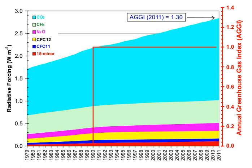Various proxies and modeling suggest larger variations in past epochs. 500 million years ago, CO2 levels were likely ten times higher than now. Higher CO2 concentrations are thought to have prevailed throughout most of the Phanerozoic eon, with concentrations four to six times current levels during the Mesozoic era, and ten to fifteen times current concentrations during the early Paleozoic era until the middle of the Devonian period.